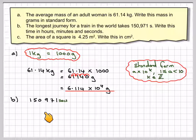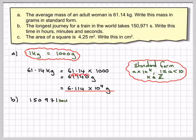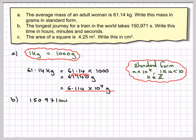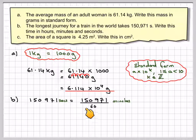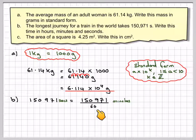150,971 seconds — the longest journey is somewhere in India. Now, this is in seconds. This is a little bit tricky. We know that 60 seconds make up 1 minute, so first of all we're going to change it into minutes. It's 150,971 divided by 60.